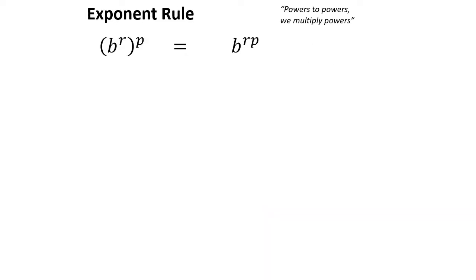The last property is the power rule. When we did exponents, powers of powers meant we multiply the powers: b to the r to the p equals b to the rp. So if you have a logarithm raised to a power, you multiply by that power, because you'd be raising a power — which is what a logarithm is — to another power.